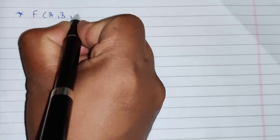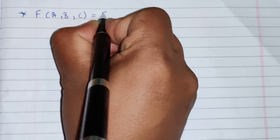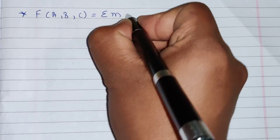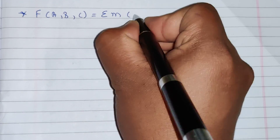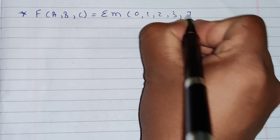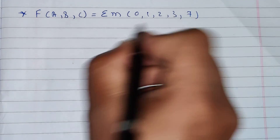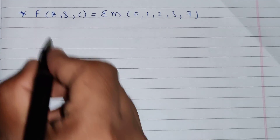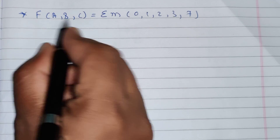Hello friends, today we are going to see how to solve a three variable Kmap problem. The problem is: function of A, B, C equals summation of minterms 0, 1, 2, 3, 7. We need to solve this using a three variable Kmap.